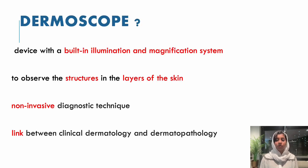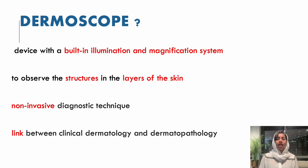A Dermoscope is known as the stethoscope of dermatologists. It's a device with a built-in illumination as well as magnification system. It basically helps us to observe the structures and different layers of the skin, and the striking feature is the non-invasive nature of the technique. It mostly serves as a link between clinical dermatology and dermatopathology, helping us to narrow down our differentials. In some cases it helps us to give a diagnosis, and in others it helps us to do a histopathological examination and finally come to a diagnosis.